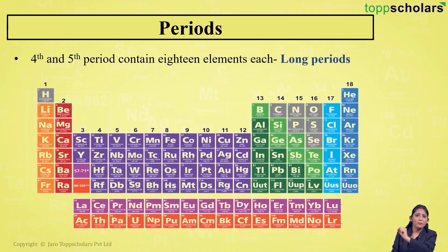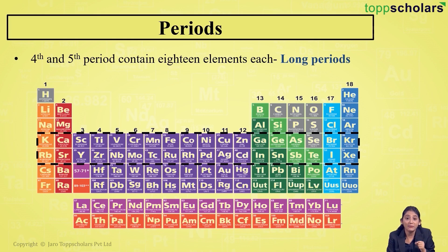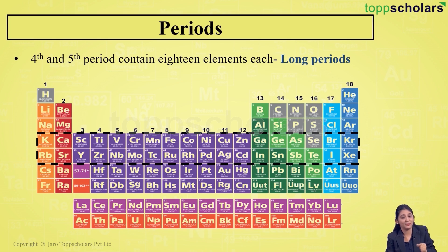Now let's look at periods four and five. They each have 18 elements, so the fourth and fifth periods are called long periods — because they each contain 18 elements.